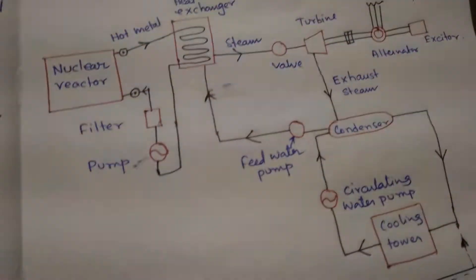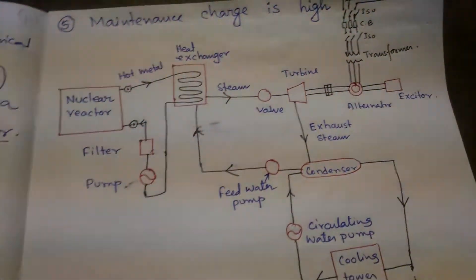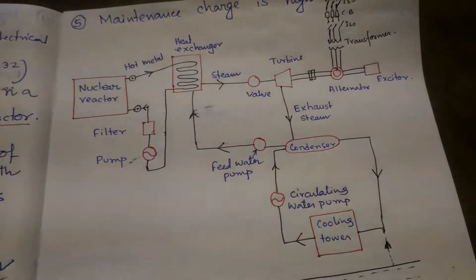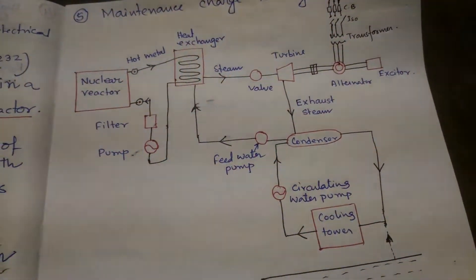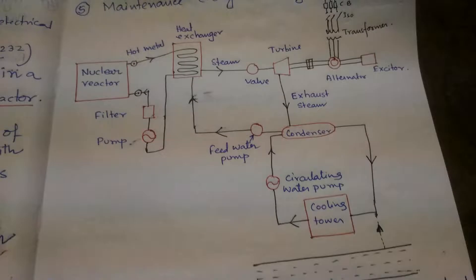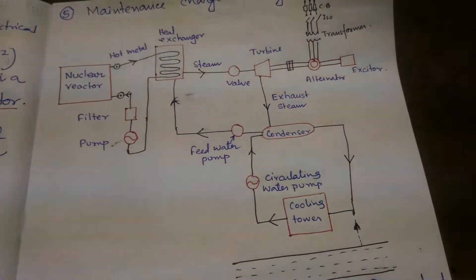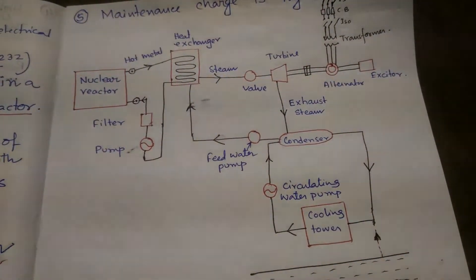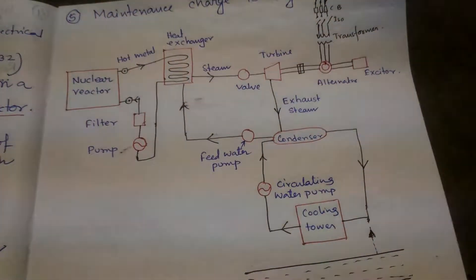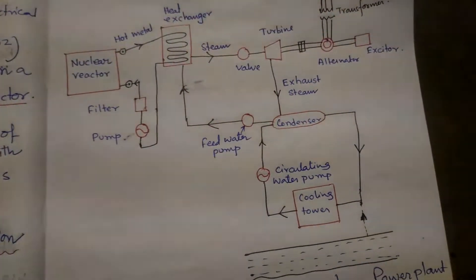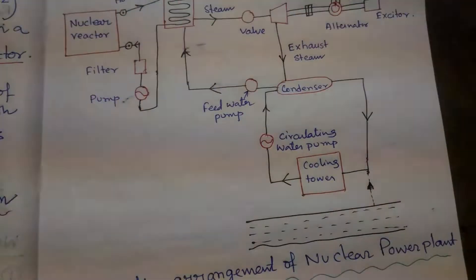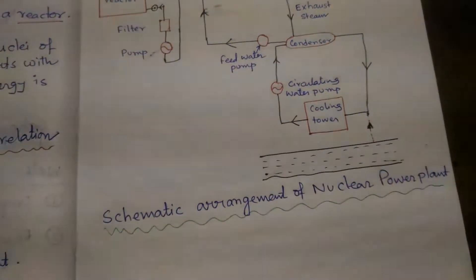Now we discuss the schematic arrangement of the nuclear power plant. You can see the symmetrical diagram for generating electricity by help of the nuclear power plant. Here the components include: nuclear reactors, heat exchangers, turbine, valves, alternators, exciters, feed water pumps, condensers, cooling towers, cooling system, and pump heaters, etc.